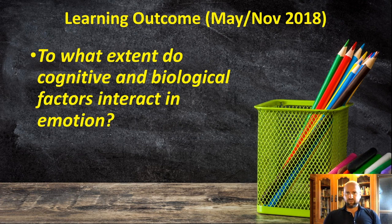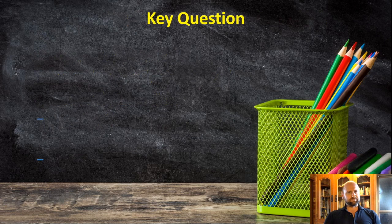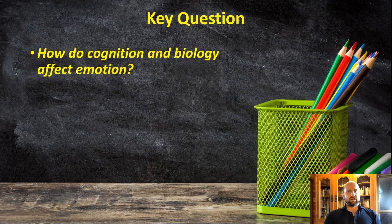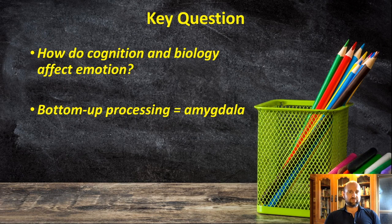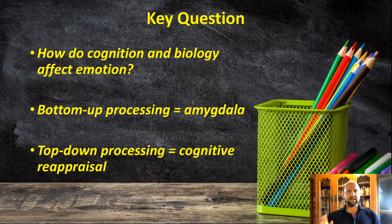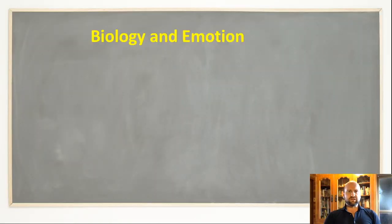The key question here is: we have to explain emotion — where does emotion come from? The question directs you to explain that emotion is affected by cognition and biology. You have to explain how both of those things influence emotion. The two examples I'm going to explain: the first is bottom-up processing via the amygdala, looking at how biological factors affect emotion, and the second is cognitive reappraisal.